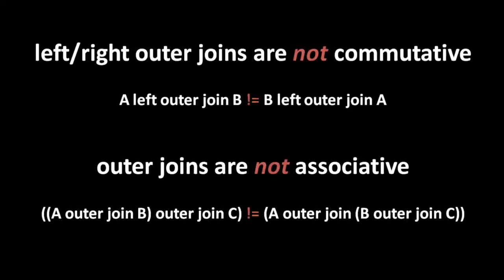Outer joins are different. While full outer joins are commutative, left and right outer joins are not - A left outer join B is not the same as B left outer join A. And when stringing multiple joins together, outer joins of any kind are not associative. So A outer join B, then outer join the result to C, is different from first joining B and C then joining to A. With outer joins, the order of joins matters in a way it doesn't with inner joins.